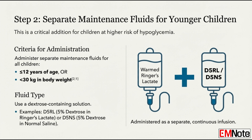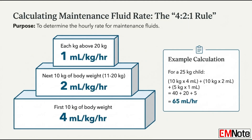Maintenance fluids apply if the child is 12 years old or younger, or if they weigh less than 30 kilograms. If a patient meets either of those criteria, you have to add the separate maintenance fluid — it's an or, not an and. And how do we calculate the volume? The volume is determined using the standard 4-2-1 rule: 4 milliliters per kilogram for the first 10 kilograms, then 2 milliliters per kilogram for the next 10 kilograms, then 1 milliliter per kilogram for every kilogram after that. For those smaller patients, that gets added on top of the hourly resuscitation rate.